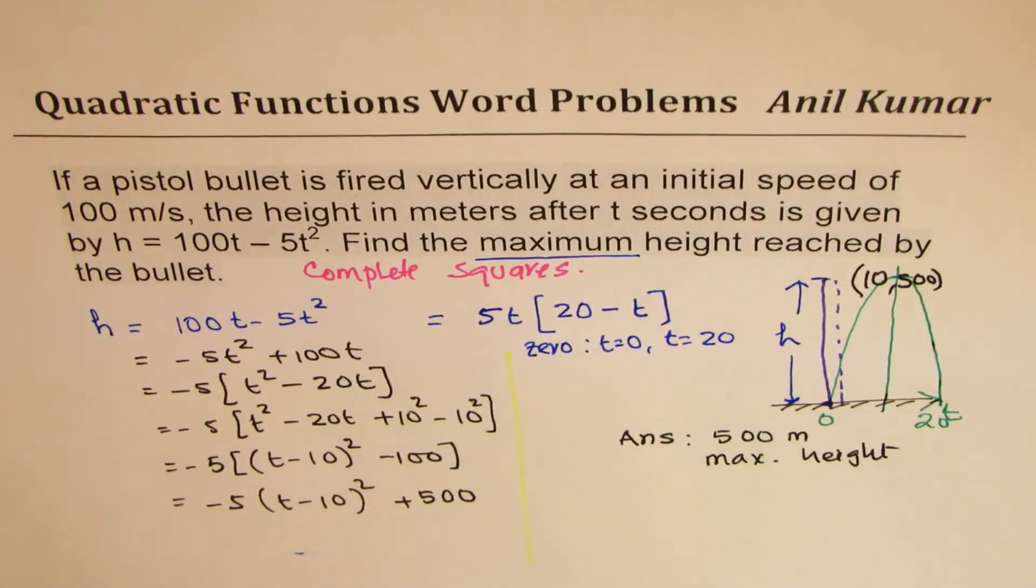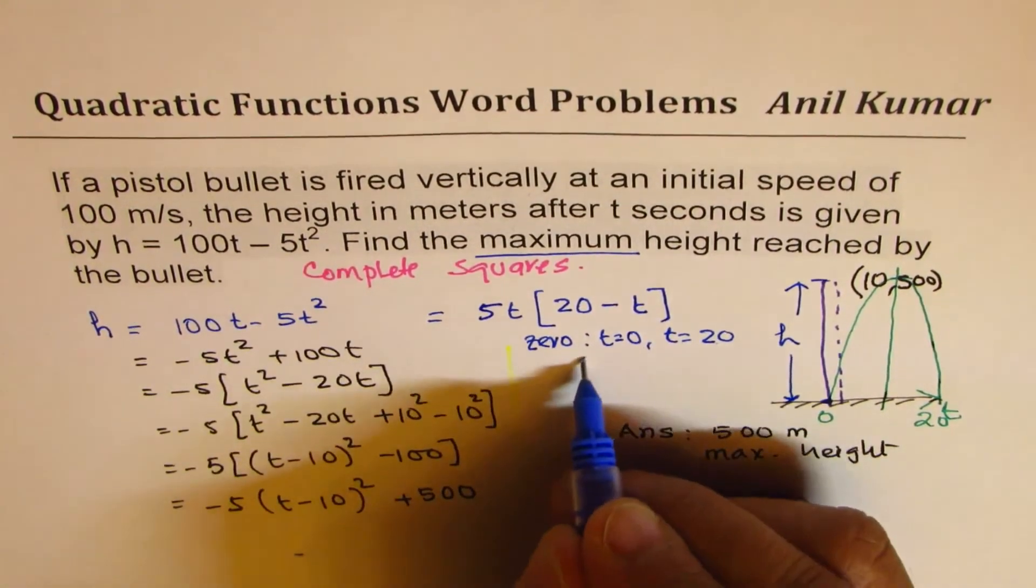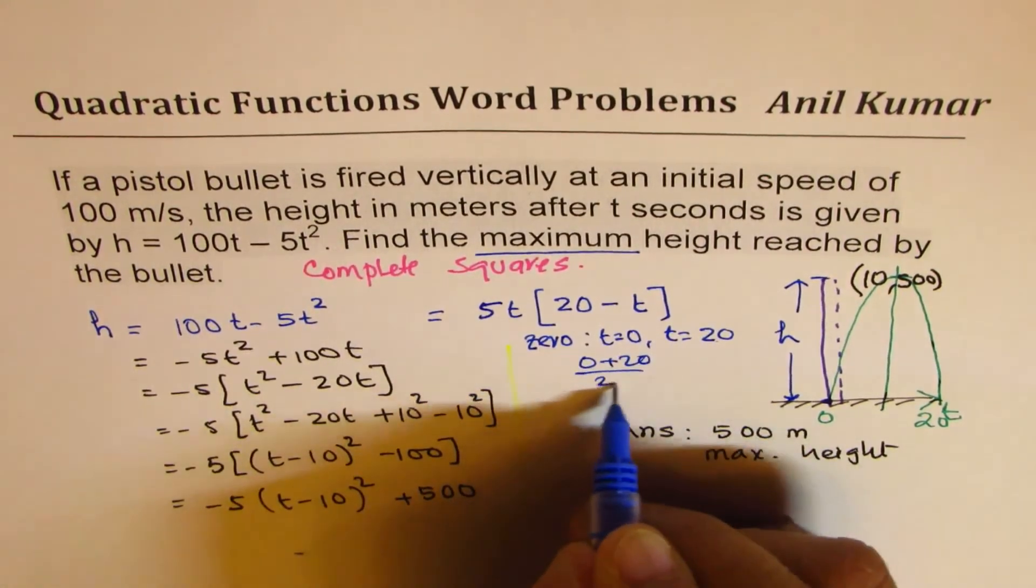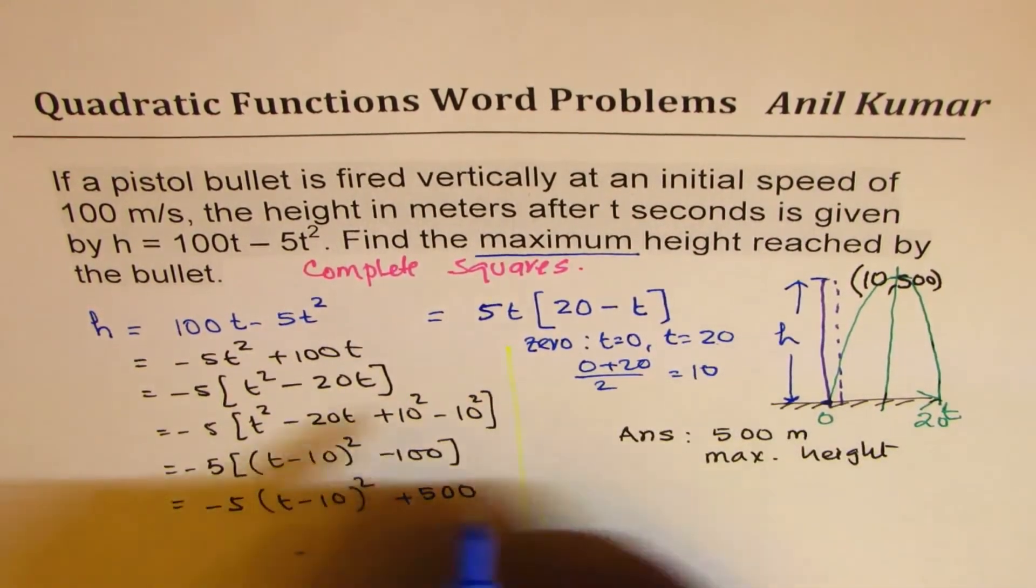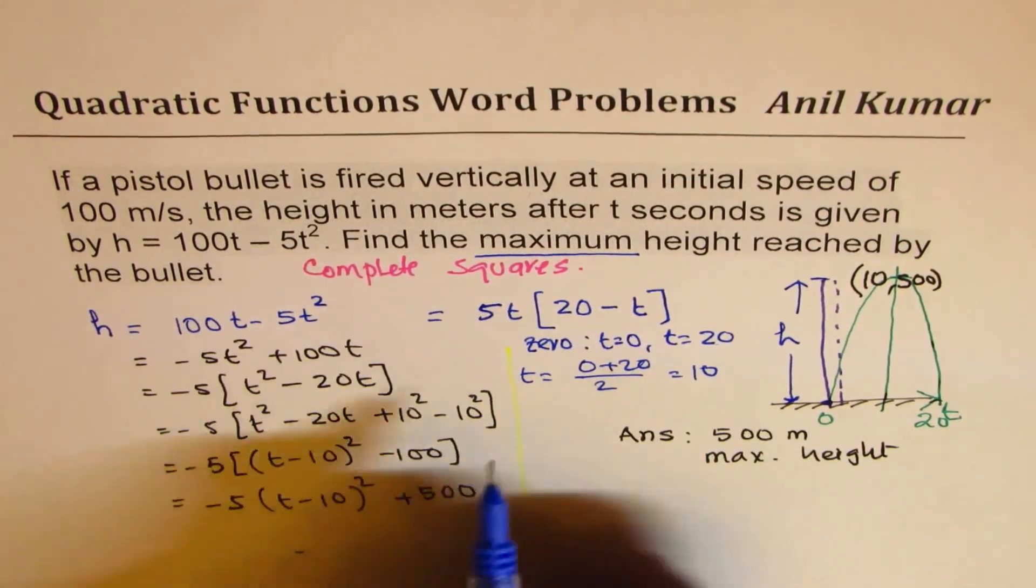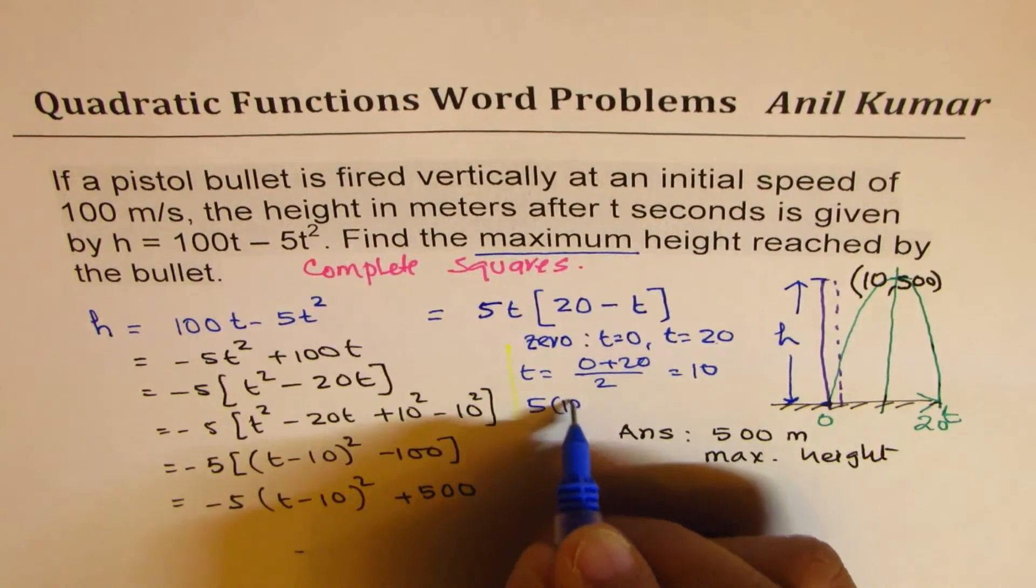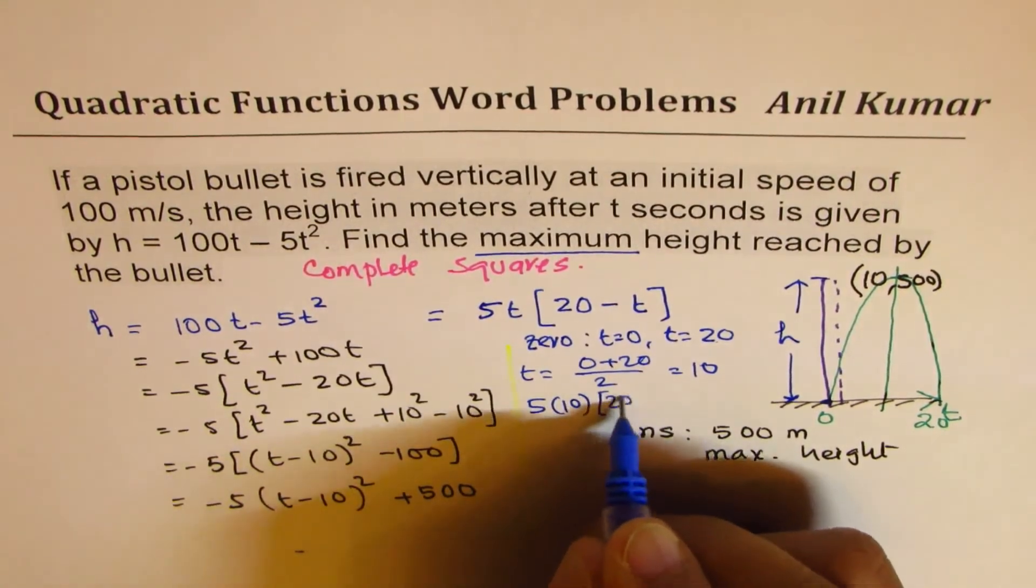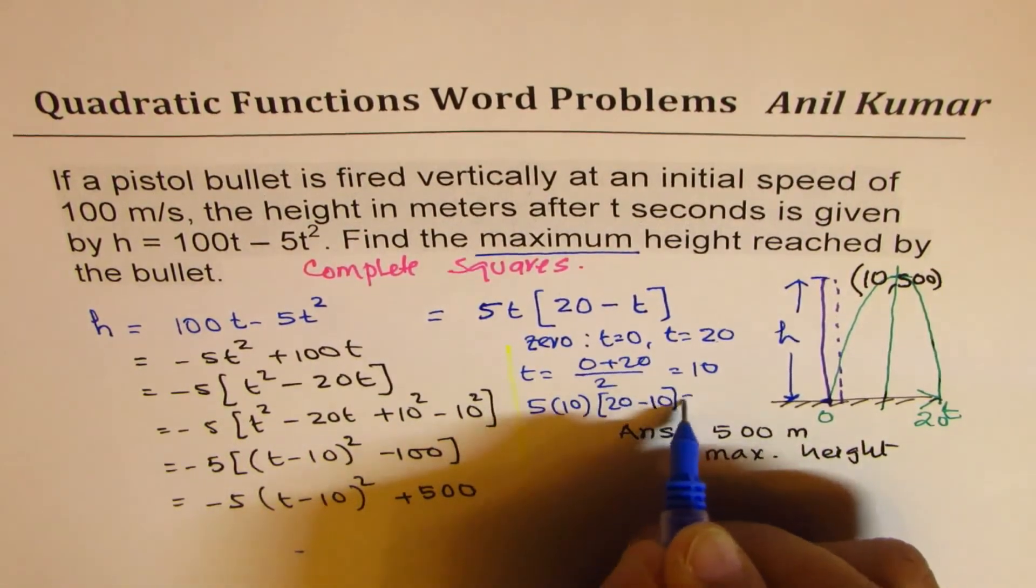Midway means add them divided by 2, which is 10. So at t equals to 10, you have maximum. So if I substitute 10 here, I get 5 times 10. 20 minus 10, which is 500.